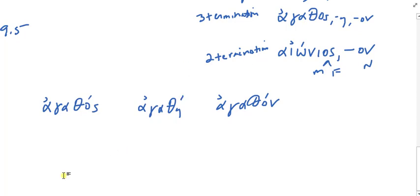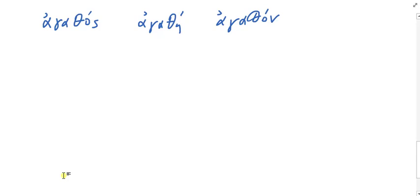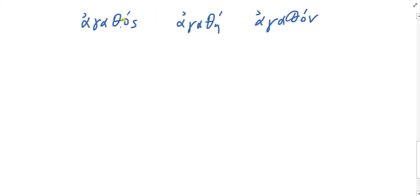Agathos is a three-termination adjective. Its masculine stem vowel is omicron — second declension. Agathē has an eta stem vowel — first declension. Agathon also has an omicron stem — second declension. So three-termination adjectives like agathos follow what's called the 2-1-2 pattern. And since you already know all the case endings for second and first declension, there is nothing new to memorize about adjectives. You should be able to parse any 2-1-2 adjective you encounter.